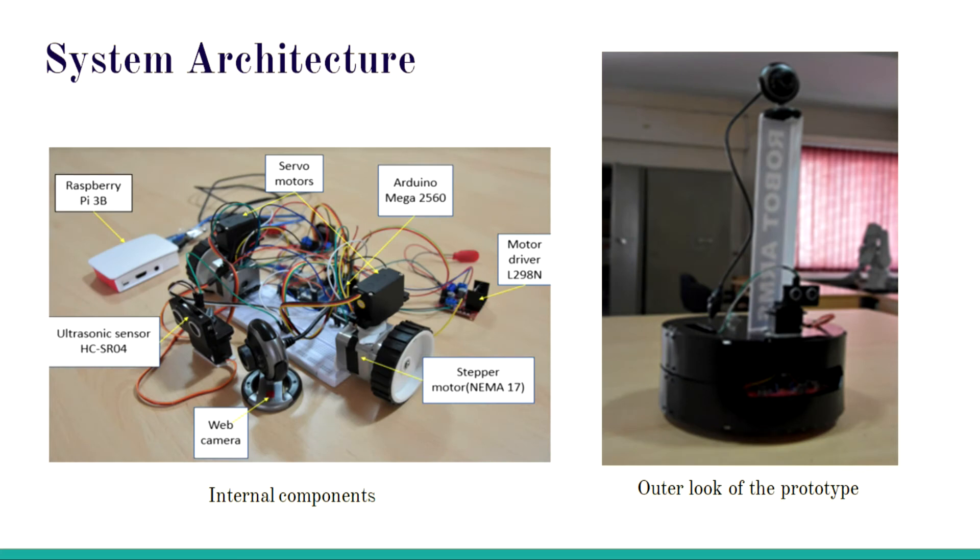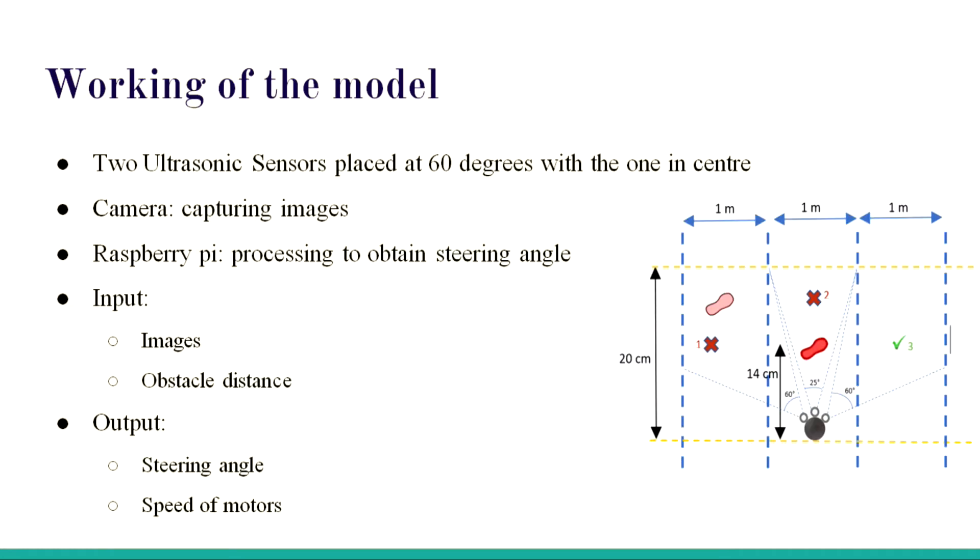This is the architecture. We use three ultrasonic sensors, one here and two at a 60 degree angle. Camera is placed at the top in the model. Arduino Atmega controller was used for processing and Raspberry Pi for processing of images to get the steering angle. Servo motors for the wheels and stepper motors for the direction. This is the complete internal and that's the outer look.